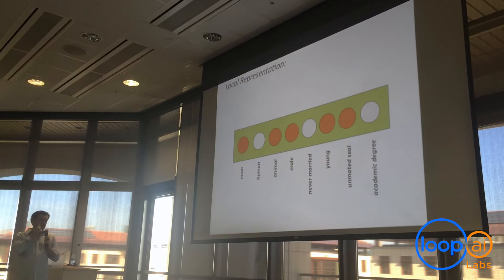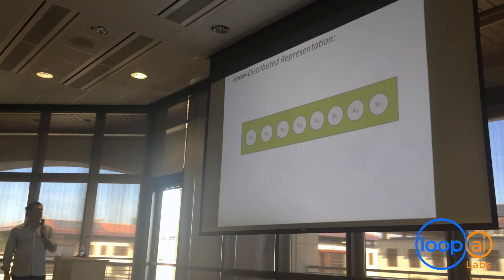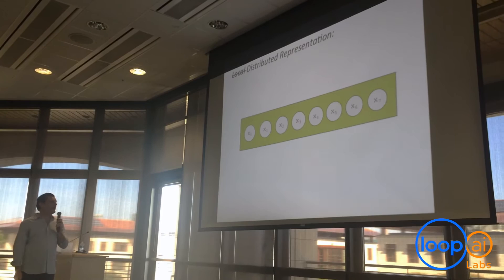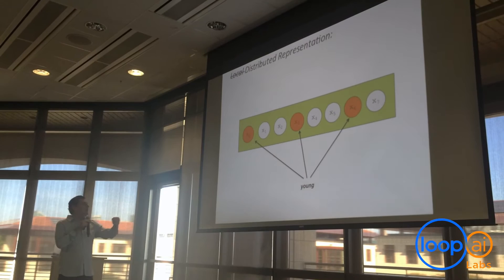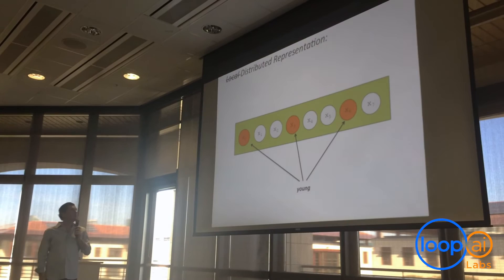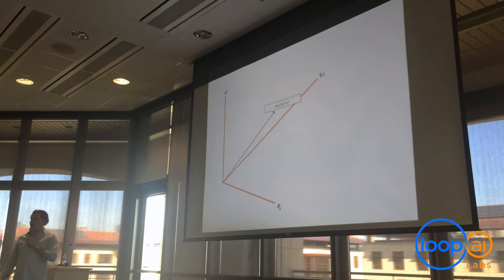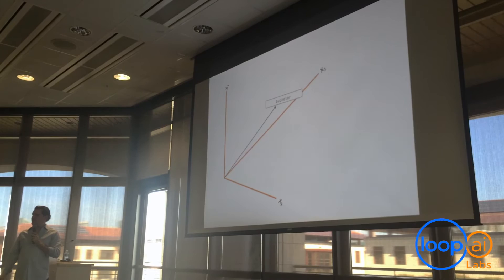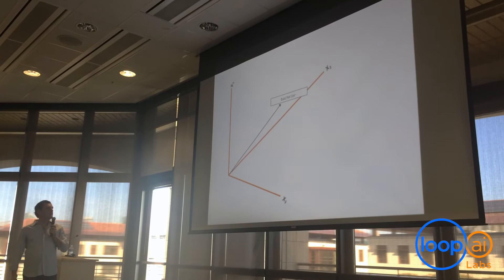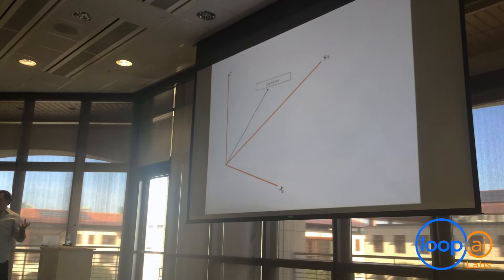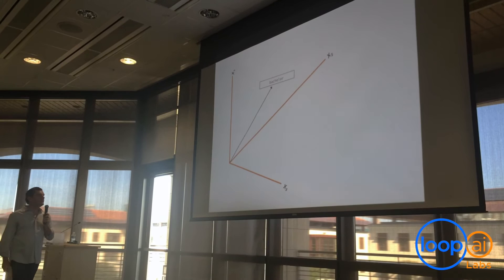Another way to look at this is that you take the local representation we had before and replace it with a distributed representation, where these latent features don't necessarily mean anything we know about a priori, but something like 'young' gets distributed among those various features. The nice thing with these latent features is that you can take a distributed representation and, as your understanding changes or new information comes in, you can tweak it in a particular context, and your ability to understand things in different contexts becomes a lot more fluid than it was with the other approaches.